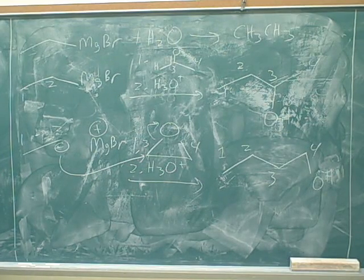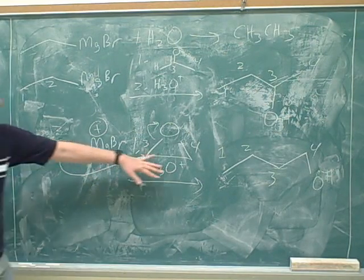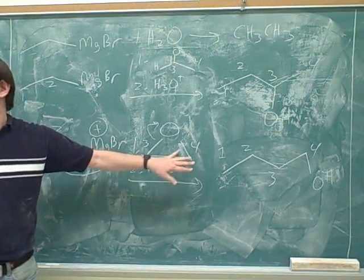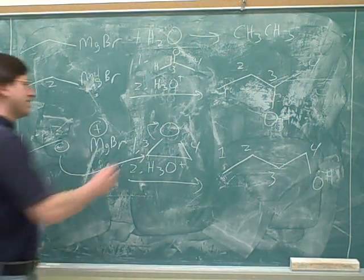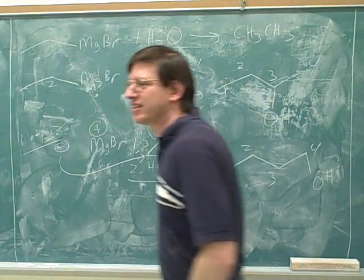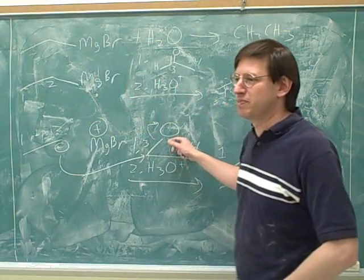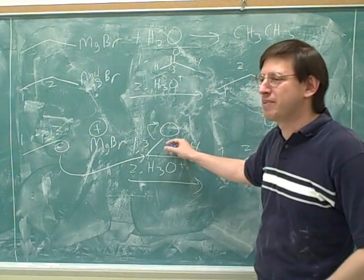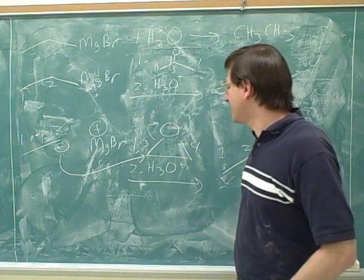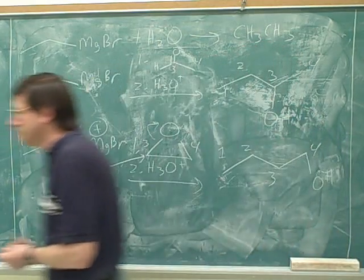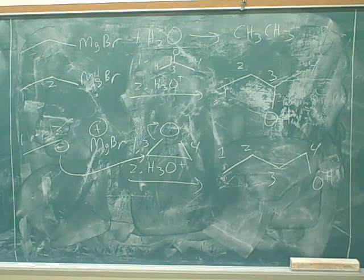You should use an epoxide when you want to add two carbons and an oxygen. Things are a little more complicated because there could be substituents on the ring. An epoxide, also called oxycyclopropane, is this three-membered ring. Epoxide is probably the more common name.